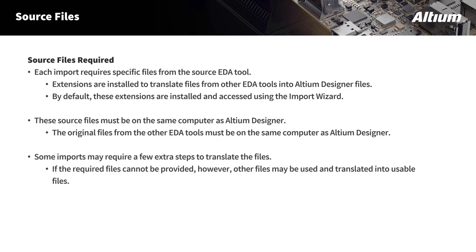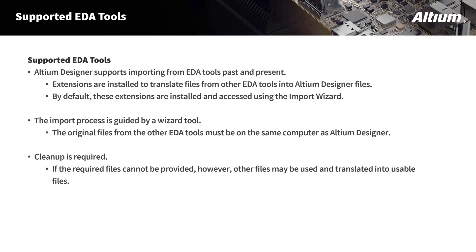If you do not have the necessary files, unfortunately the process cannot be completed. There are some ways to translate other file types into supported files, but those will be covered under the specific videos moving forward. Also, make sure that the source files are on the same computer as Altium Designer. Extensions make the translating process possible, and these extensions are installed by default and are important for the import process.